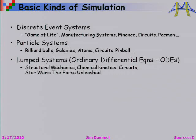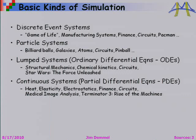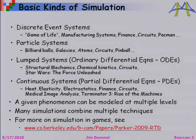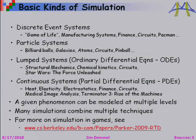The final level is where everything is continuous — those are called partial differential equations — and they model all sorts of things, including finance. And finally there's Terminator 3: Rise of the Machines. Any given phenomenon can be modeled at multiple levels. Circuits, for instance, have simulations at the discrete level, the particle level, the lumped level, and the continuous level — depending on your interest, you may simulate it every different way. I should note that Star Wars: The Force Unleashed was done at Berkeley, and Terminator 3 was done at Stanford, so you can imagine I'll use Star Wars as more of a running example.